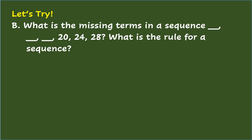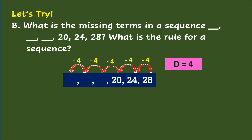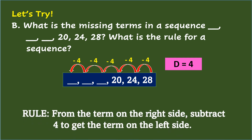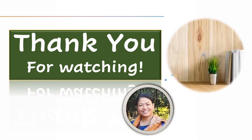Let's try: what are the missing terms in the sequence with three blanks, then 20, 24, 28? Applying the working backwards strategy, the terms are decreasing by 4, so the common difference is 4. Subtracting 4 from the term on the right gives the next term on the left. So the missing terms are 16, 12, and 8. We'll see you next time. Bye.